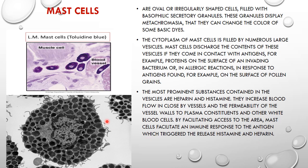Antigens cause a triggering effect on the mast cells. The mast cells release their secretions — heparin and histamine — from stored vesicles. This increases blood flow and increases the permeability of the blood vessels to cytokines and other constituents, initiating a cascade of immune response.